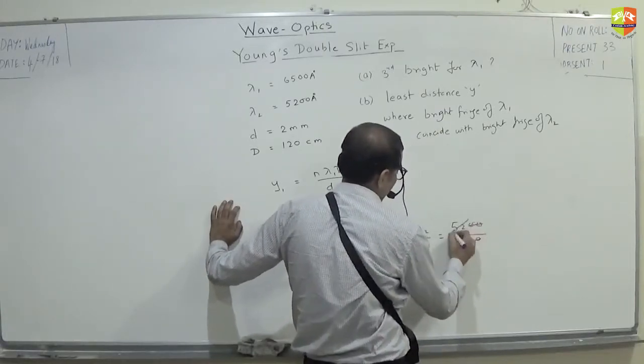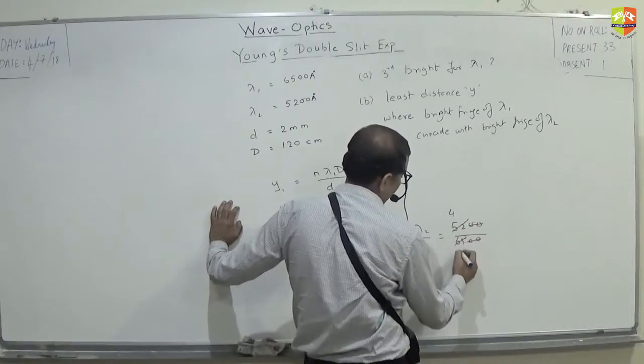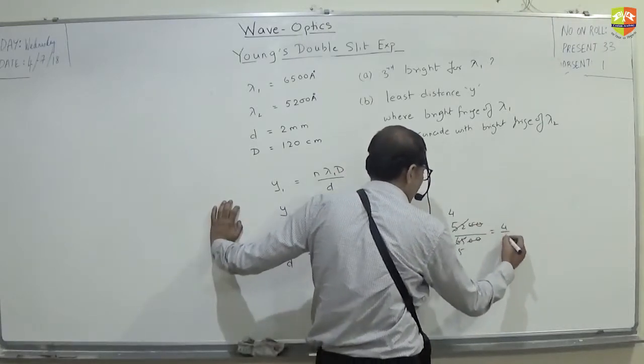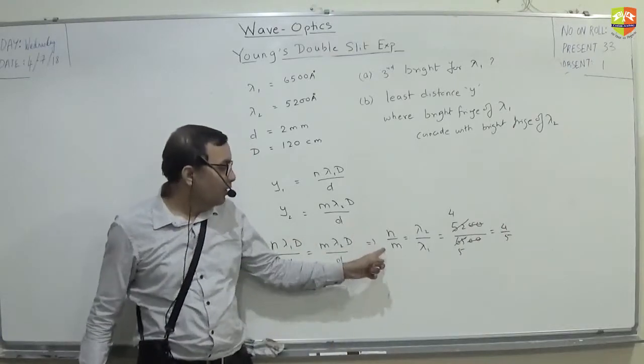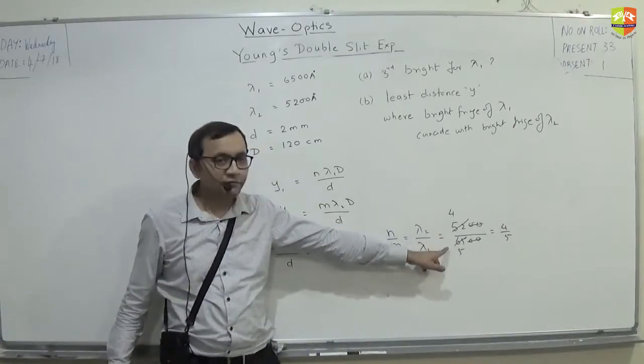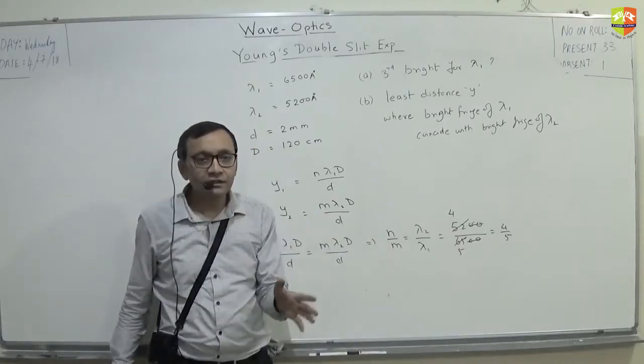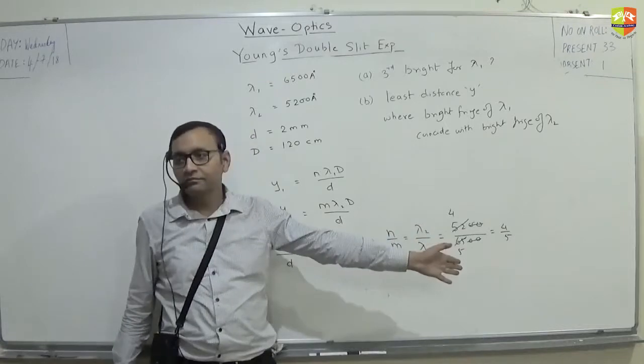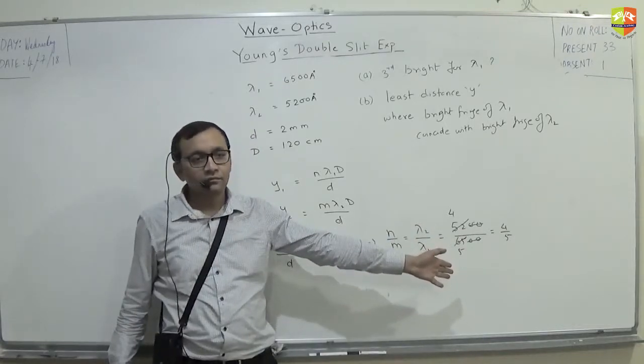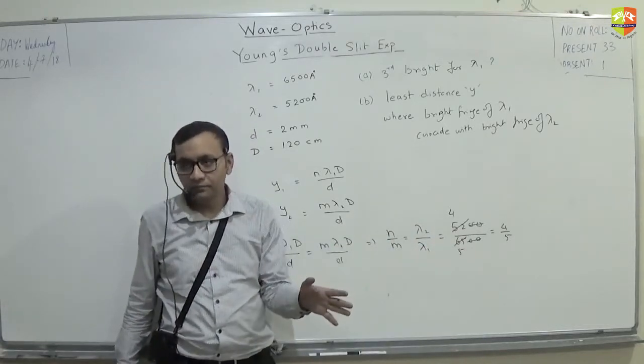So, this is 13, 4 of this. 13, 5 of this. So, this is 4 by 5. Now, what is the minimum value of n and m for which it is 52 by 65? Given n and m has to be integers. n is equal to 4 and m is equal to 5. This is the minimum integer.